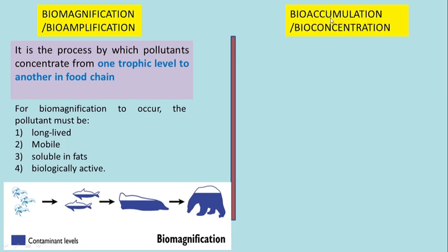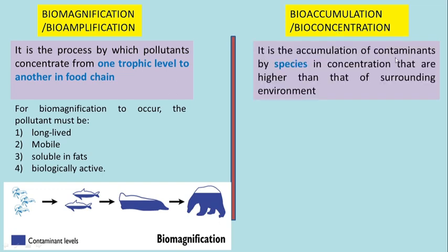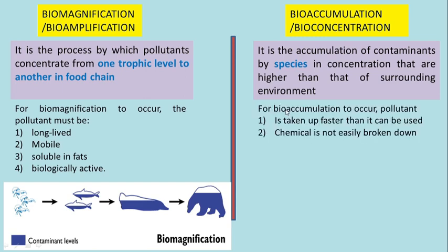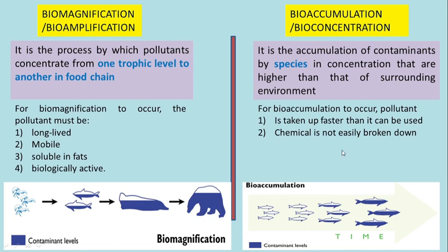Another process is bio-accumulation, also known as bioconcentration. Bio-accumulation and bioconcentration occur at the level of a single individual or single species. It is the accumulation of contaminants by a species in concentrations higher than that of the surrounding environment. For bio-accumulation to occur, the pollutant should be taken up faster than it can be used and should not be easily broken down. Over time, such species may have very high concentrations of certain chemicals — when a single species accumulates a lot of chemical due to high absorption tendency, it is known as bio-accumulation.